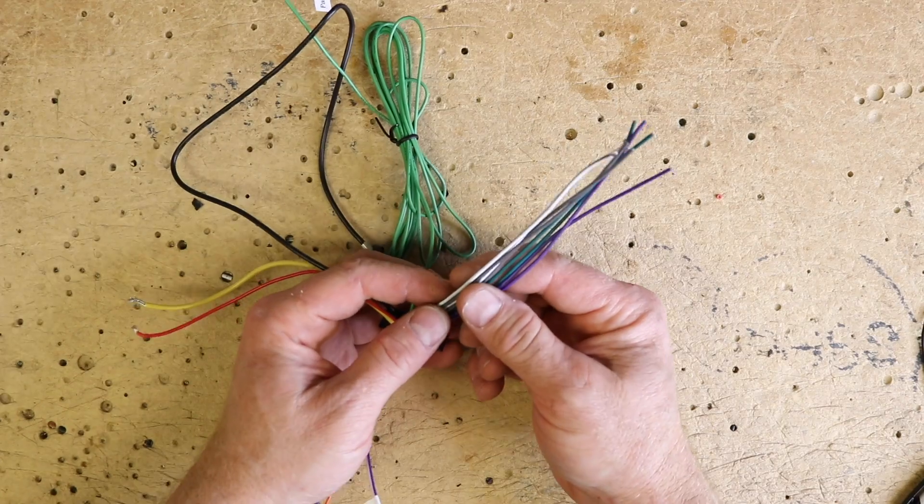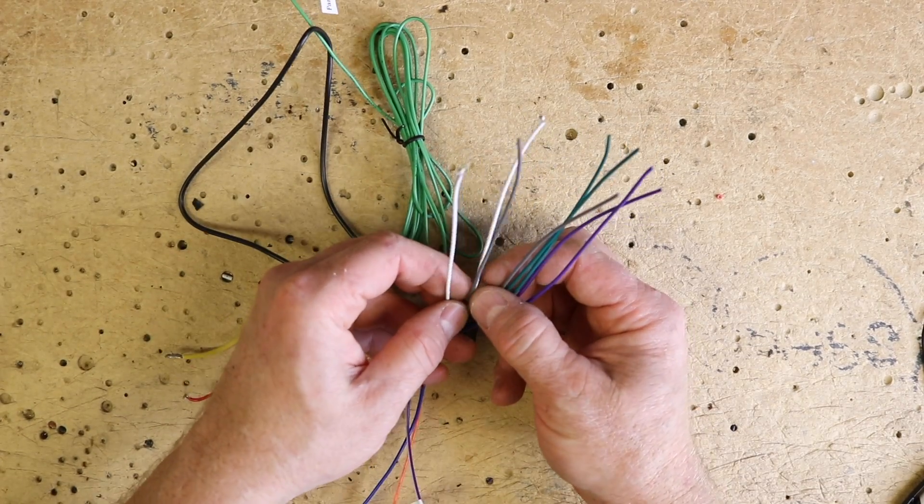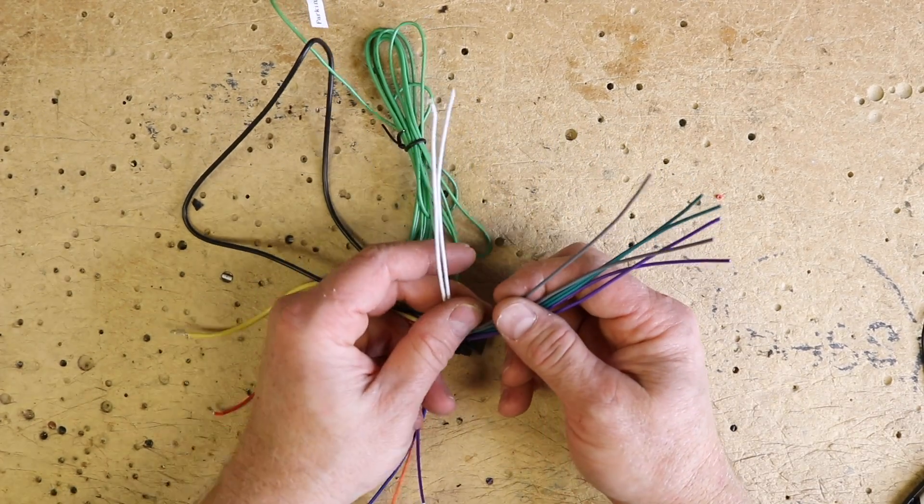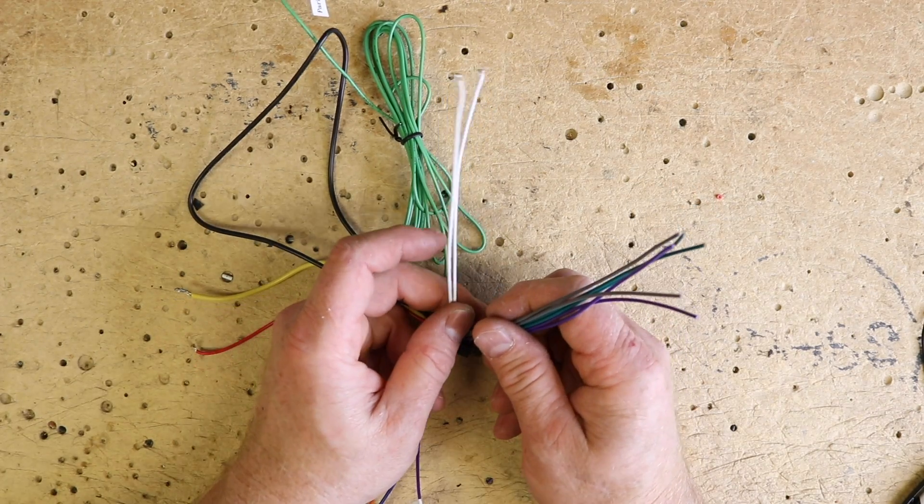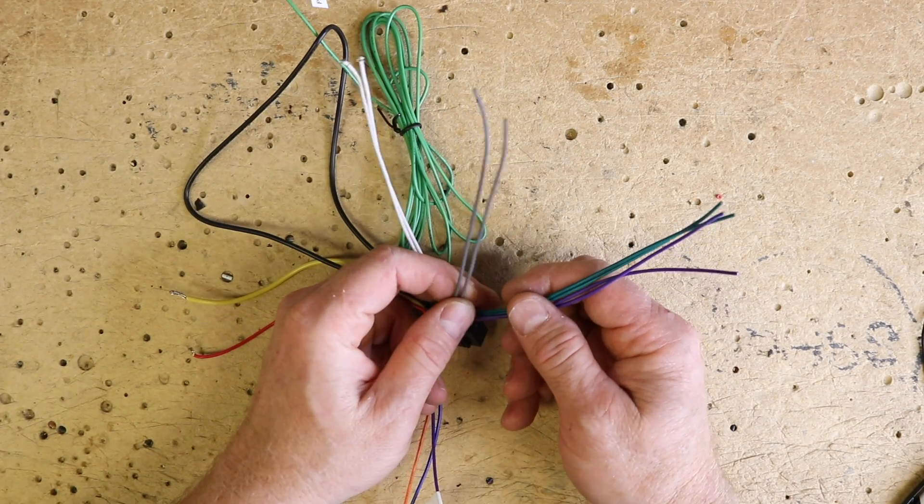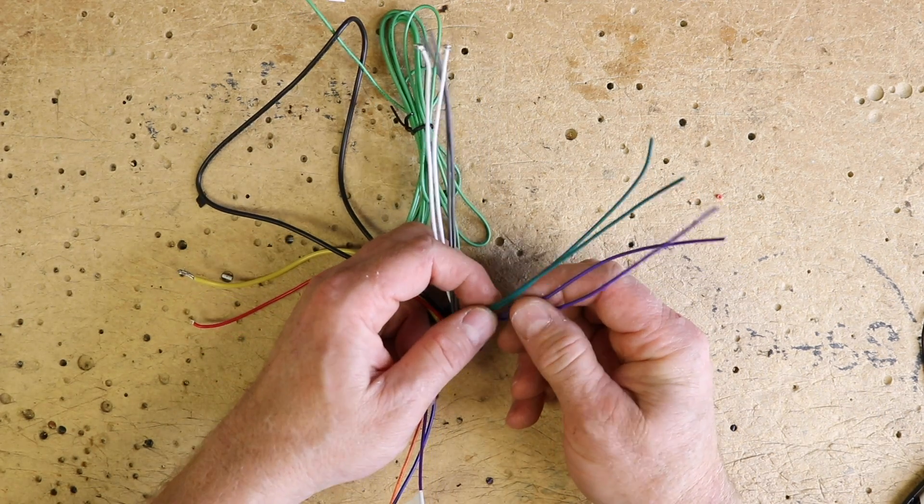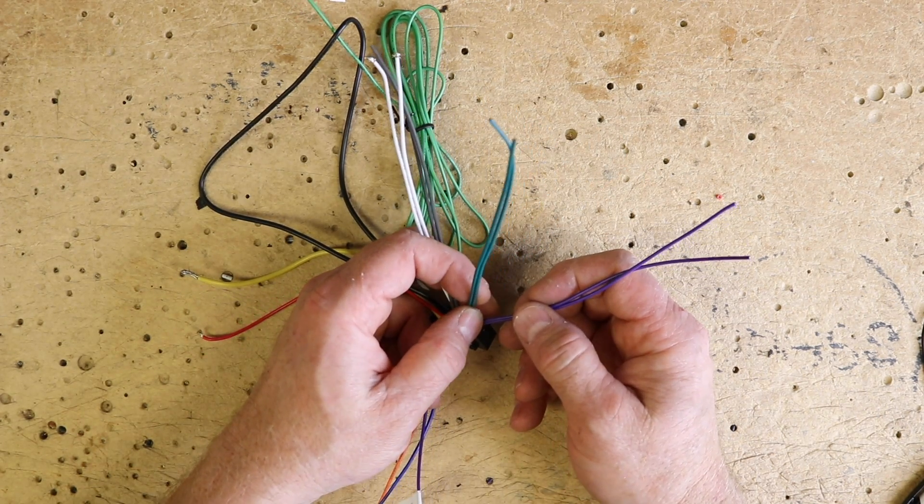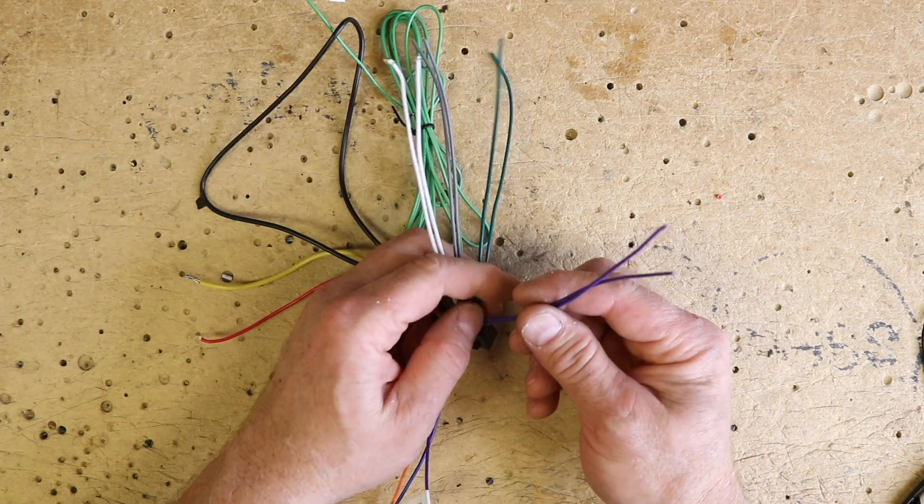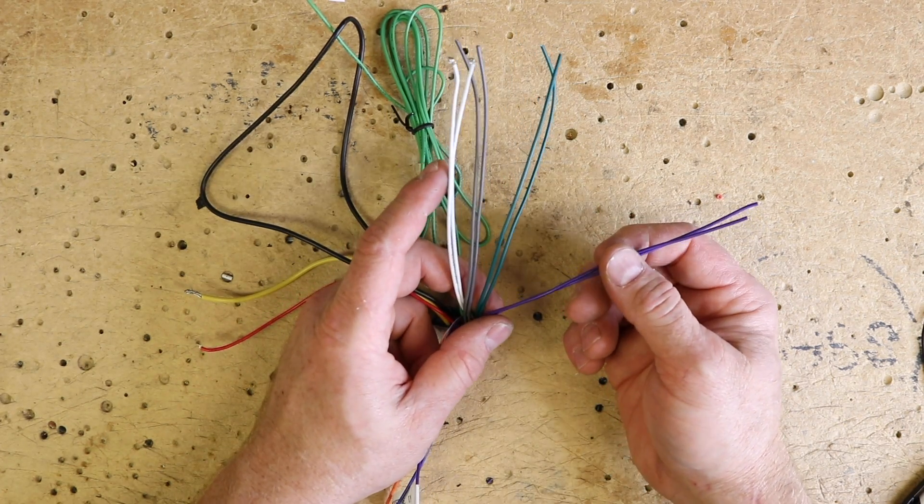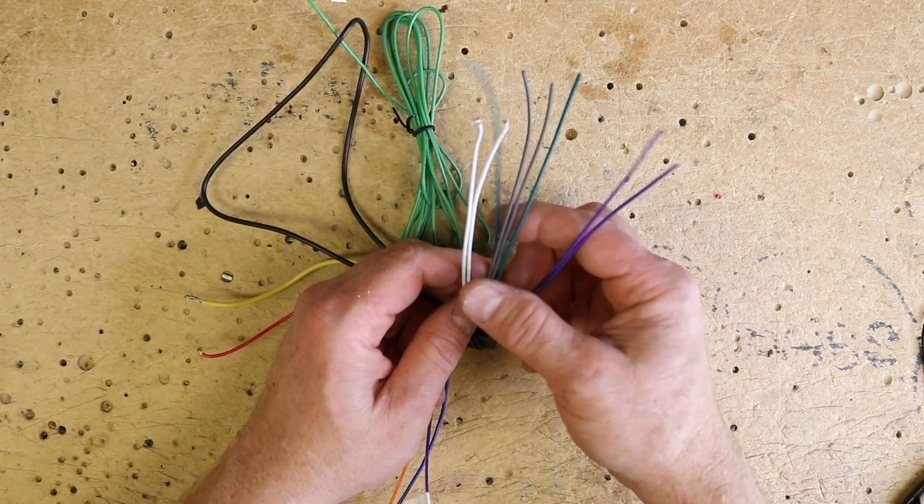We'll start with the speaker. You're going to have a set of whites, which we like to call one because that's the driver's front. You're going to have a set of grays, which we call two because it's passenger front. A set of greens, which we call three because it's the driver's rear. And purples, which we call four, which are the passenger rear.